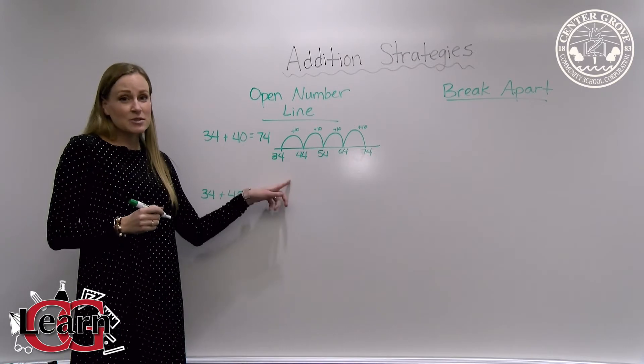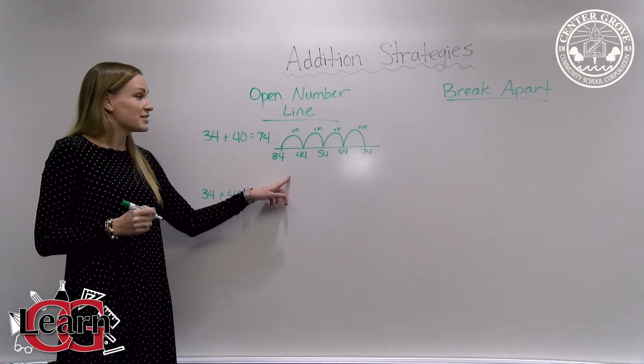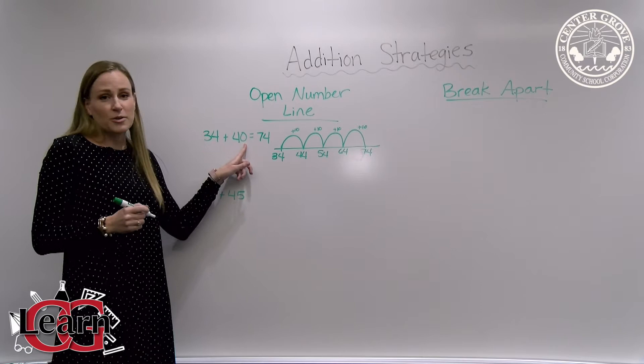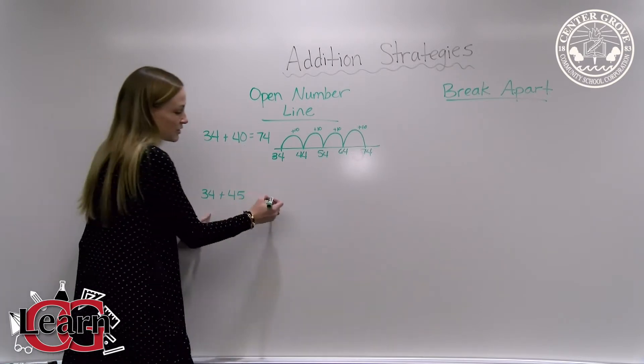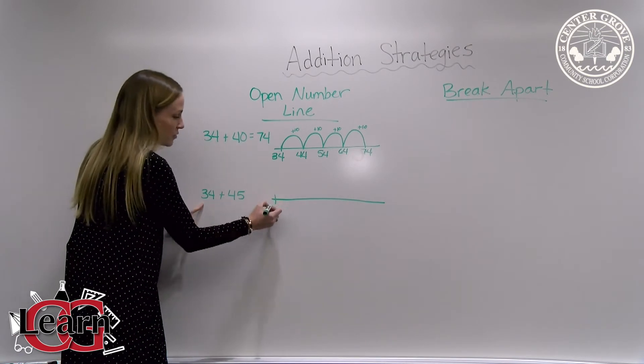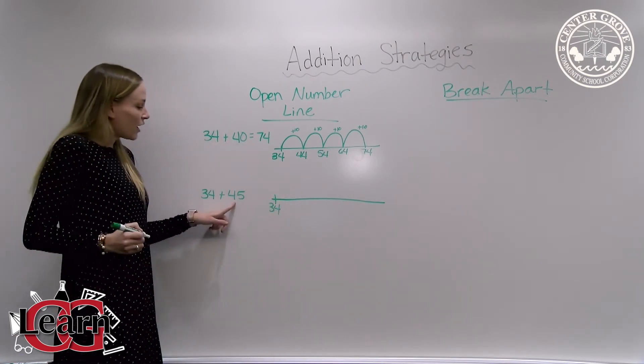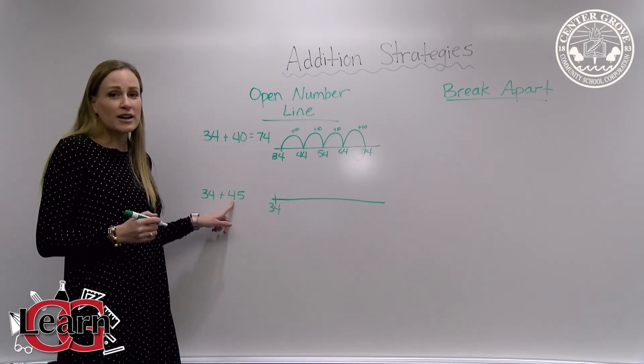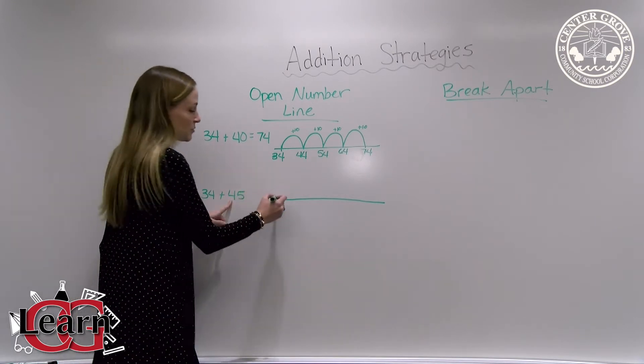You can use this same strategy if you're adding and it's not just a number with a zero in the ones place. We're going to start the same way and draw our open number line and start with 34. Our digit is a four in the tens place, so we're still going to do our four tens jumps.